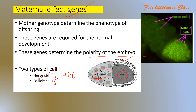One more important thing is that these nurse cells and follicle cells are responsible for producing maternal effect genes. The nurse cells provide nourishment, and the follicle cells help in maturing the oocyte.